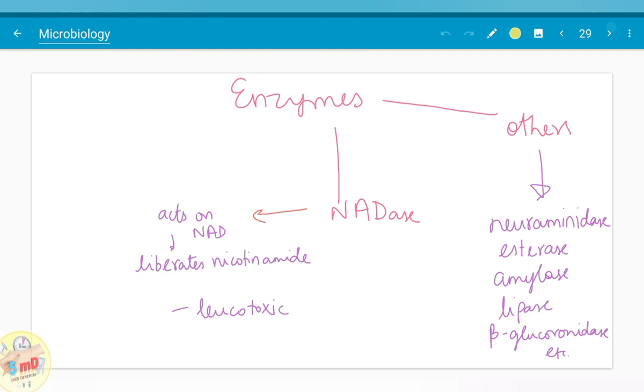The final enzyme is NADase. It liberates nicotinamide by acting on NAD. It is toxic in nature. Other enzymes include neuraminidase, esterase, amylase, lipase, and beta-glucuronidase.